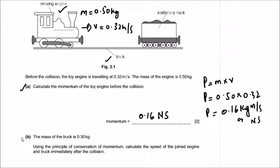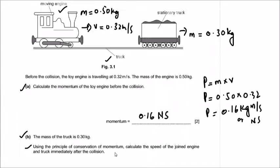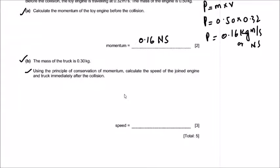Part b: the mass of the truck is 0.30 kilograms. Using the principle of conservation of momentum, calculate the speed of the joined engine and truck immediately after the collision. To apply conservation of momentum, we compare total momentum before and after the collision.